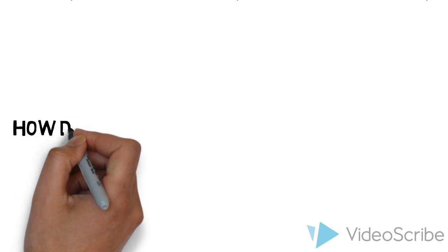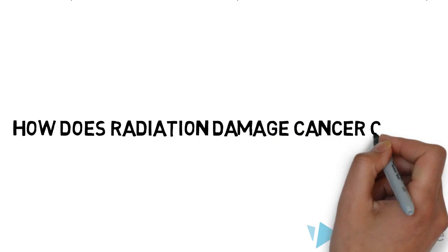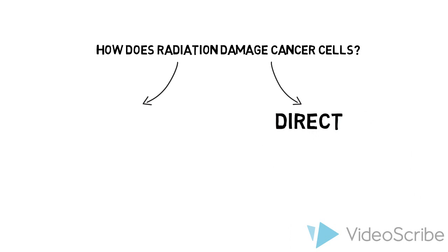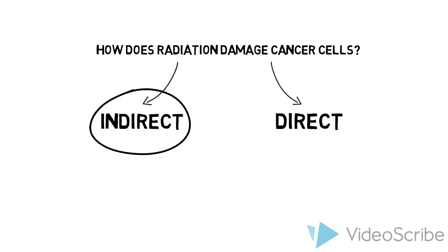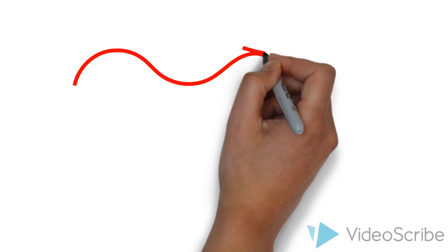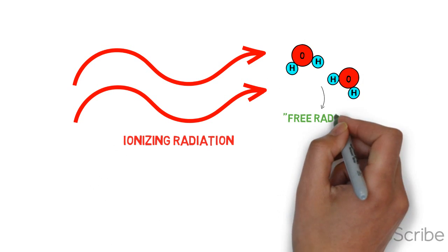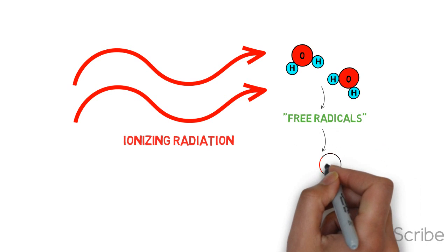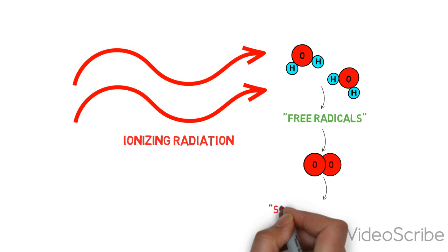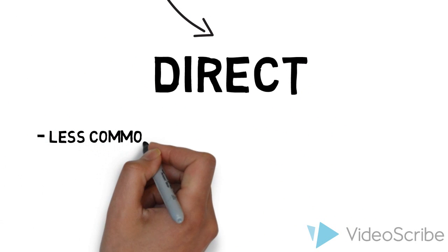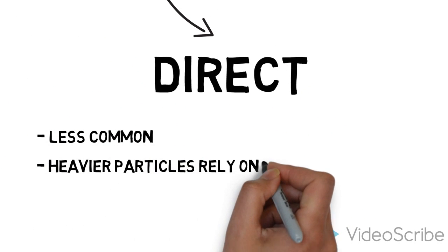Mechanism of action: how does radiation damage cancer cells? At the cellular level, radiation can cause direct DNA damage or indirect DNA damage. Most of our current radiation techniques cause indirect DNA damage — this is when radiation contacts water around target cells to cause reactions that produce free radicals. Additional contact with nearby oxygen produces an even more toxic superoxide. These radicals, in turn, cause damage to the cell. Direct damage is less common; heavier particles like protons rely on this form of damage.